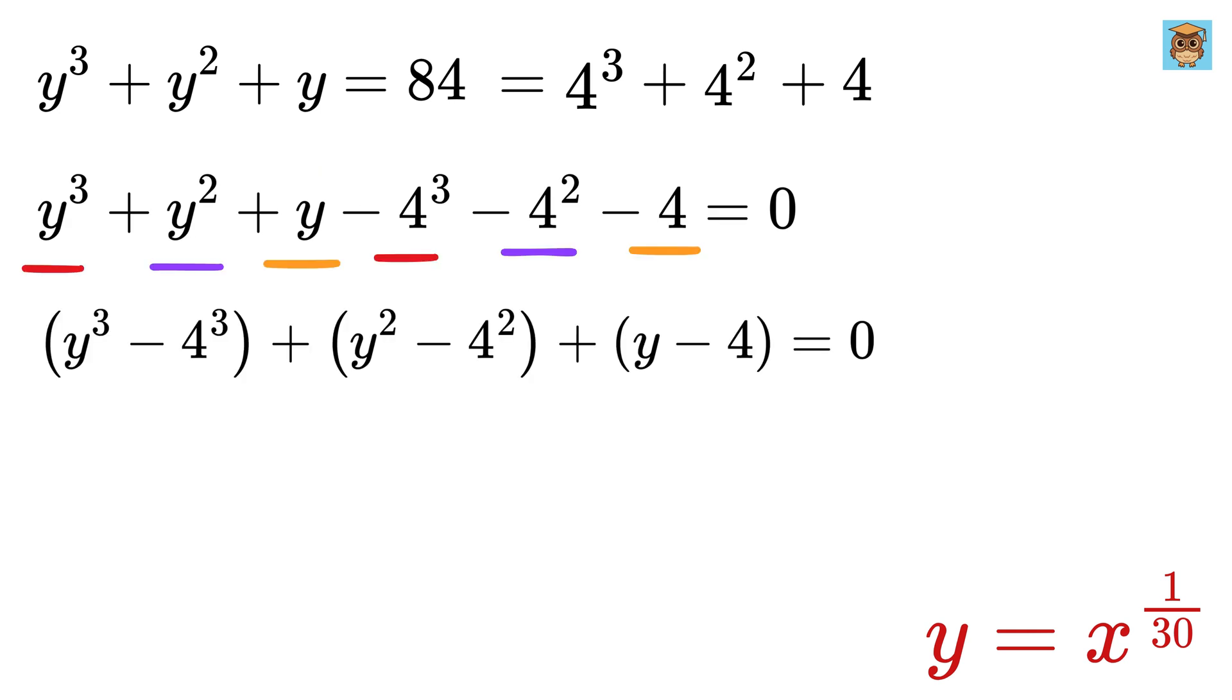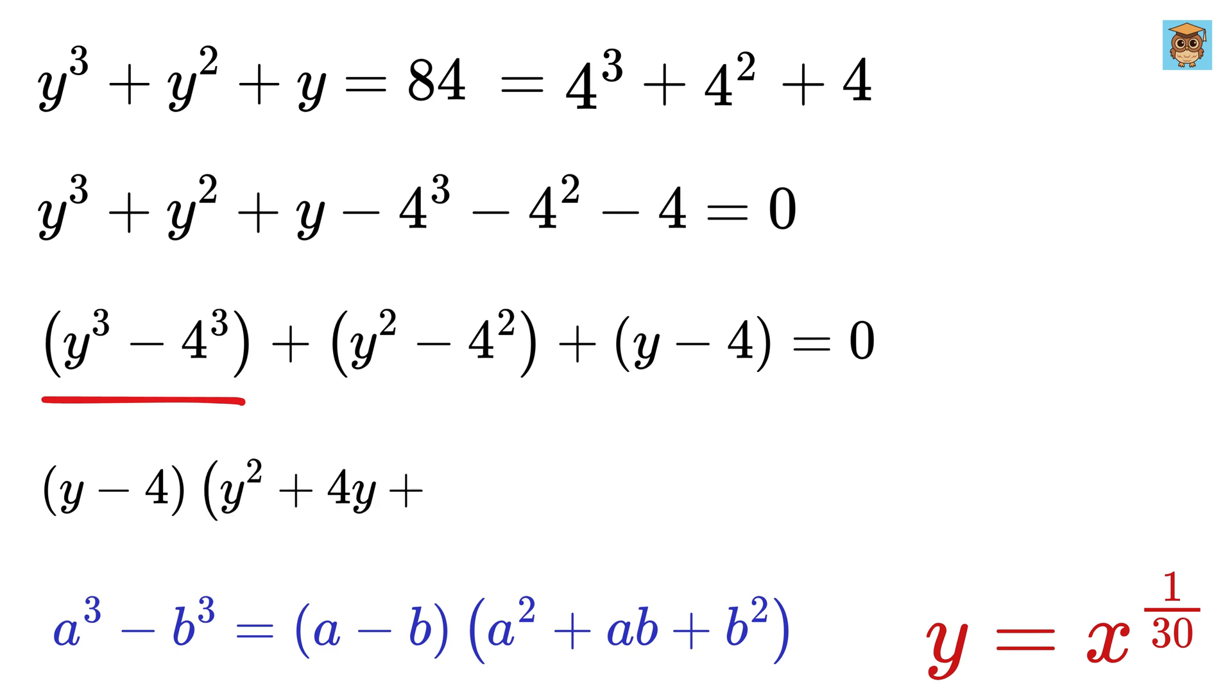Now we can rearrange the terms. The first group, y raised to 3 minus 4 cubed, is a difference of cubes, and we can use this formula to factor the difference of cubes. So using a as y and b as 4, we can factor this as y minus 4 multiplied by y squared plus 4y plus 16.